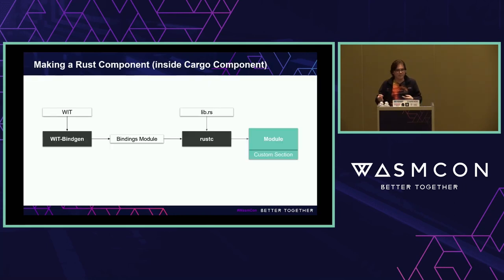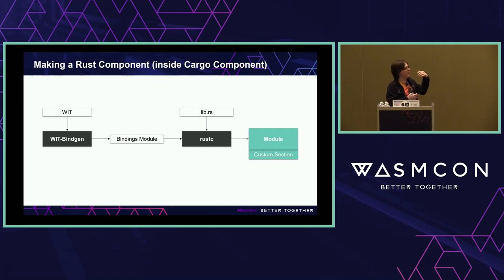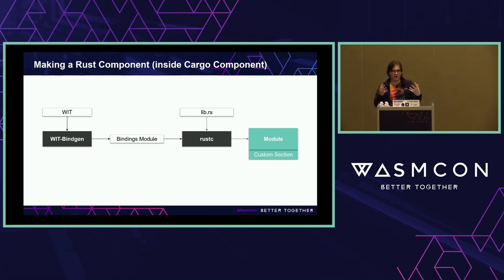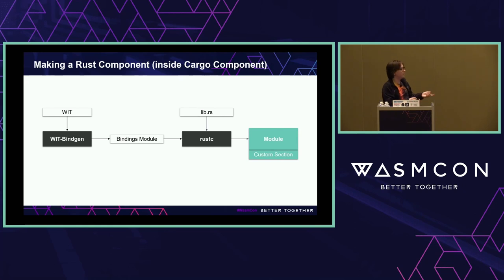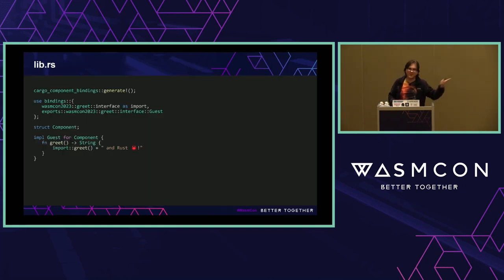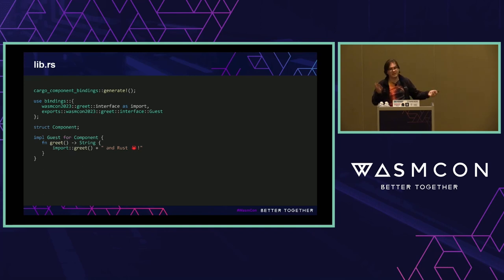This is also the same flow for Rust, albeit inside of cargo component — a tool that wraps this process so you don't have to call these functions yourselves; you can just call cargo component build. But under the covers it's also using wit-bindgen. It generates a module of code combined with your library code, compiled with rustc to make a module with a custom section. And our source code looks like this — all you have to do is implement this trait Guest for our component, where we call the imported greet function and add "and Rust" to the end.